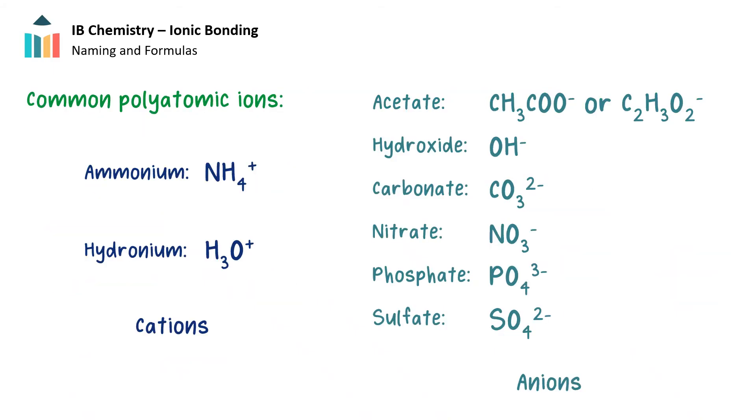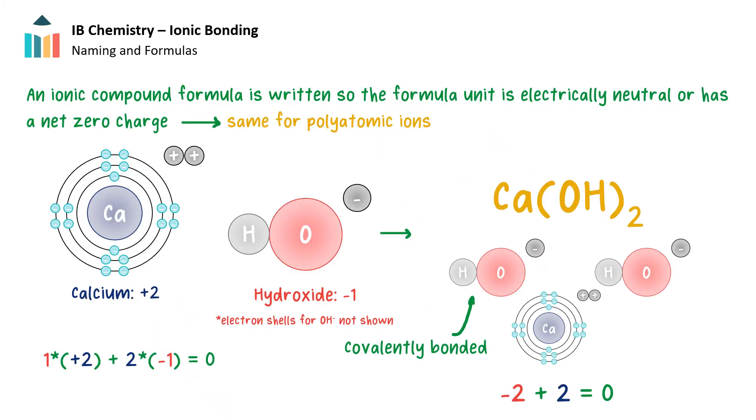By this time in chemistry, you have seen and probably know a number of polyatomic ions, that is ions that are groupings of more than one atom. Here are some of the most common polyatomic ions that you might see in IB chemistry.